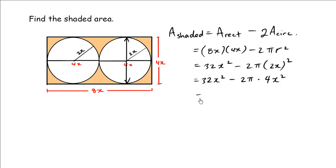So what we have here is 32x² minus 2 times 4 is 8πx², and this is our final answer.